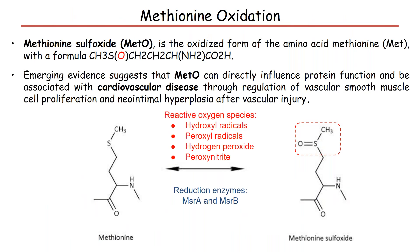I'm going to take the example of methionine oxidation, which is one of the 200 different types of PTMs. The sulfur-containing amino acids, such as methionine and cysteine, are more easily oxidized than other amino acids. Reactive oxygen species, or ROS, can post-translationally modify methionine into methionine sulfoxide, or METO. Emerging evidence suggests that METO can directly influence protein function and be associated with cardiovascular disease. METO also increases with age in body tissues, which is believed by some to contribute to biological aging.